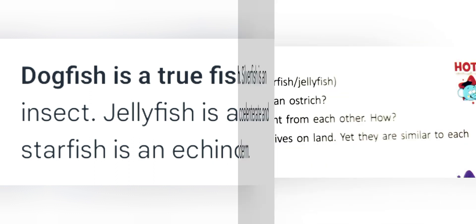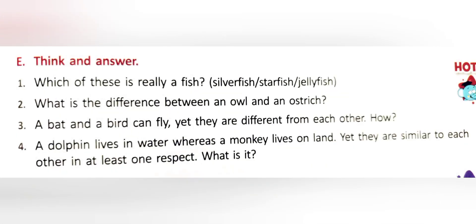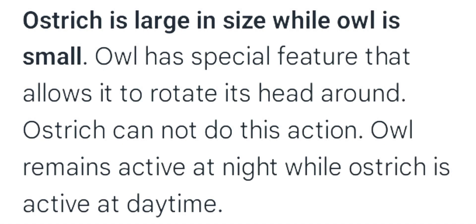Question two: What is the difference between an owl and an ostrich? Answer: Ostrich is large in size while owl is small. Owl has special features that allow it to rotate its head around, but ostrich cannot do this. Owl remains active at night while ostrich is active during the daytime.